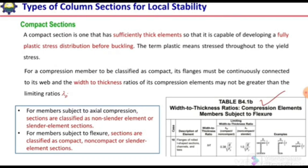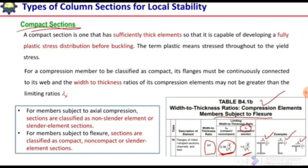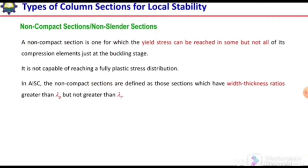To check whether it is a compact section, we use this table when the section is subjected to both axial and flexural loading. For the flange of a W-section, channel section, or HP section, if the b/t ratio is less than the tabulated value, it is a compact section. If it is greater than that value but less than λr, then it is a non-compact section.